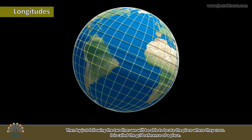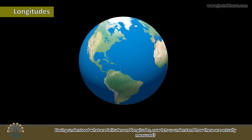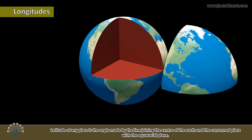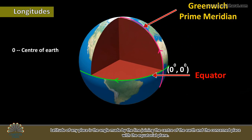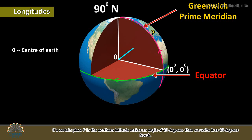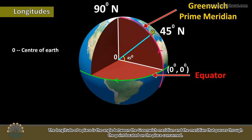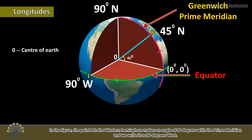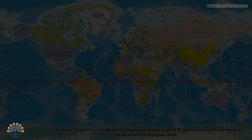It is called the grid reference of a place. Having understood what latitudes and longitudes are, now let us understand how these are actually measured. The latitude of any place is the angle made by the line joining the center of the earth and the concerned place with the equatorial plane. If a certain place P in the northern latitude makes an angle of 45 degrees, then we write it as 45 degrees north. The longitude of a place is the angle between the Greenwich meridian and the meridian that passes through the point located on the place concerned. In the figure, the point L in the western hemisphere makes an angle of 90 degrees with the prime meridian and we write it as 90 degrees west.